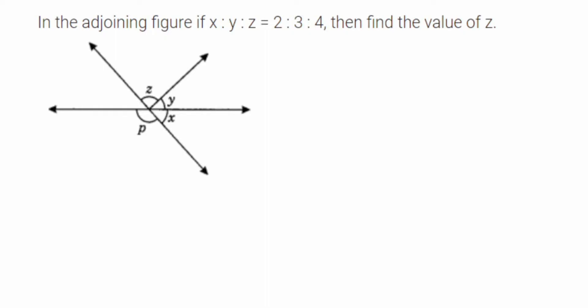Here's a question from lines and angles. In the adjoining figure, if x is to y is to z is 2 is to 3 is to 4, find the value of z.